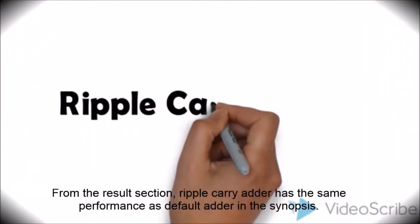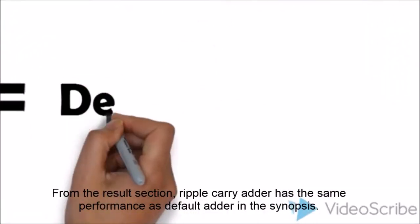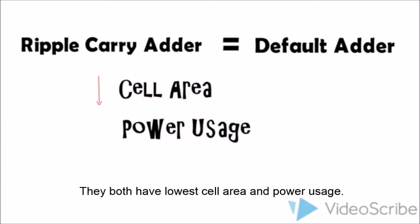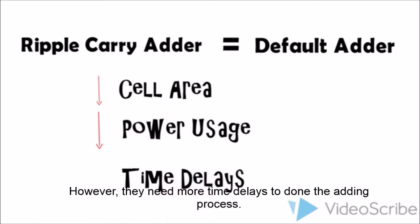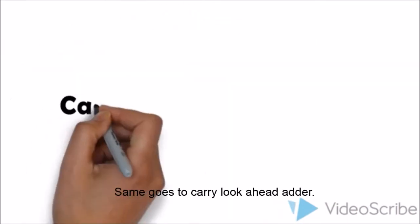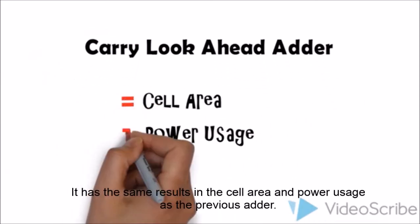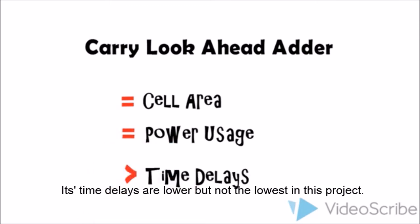From the results section, the Ripple Carry Adder has the same performance as the Default Adder in Synopsis. They both have the lowest cell area and power usage. However, they need more time delays to complete the adding process. The same goes for the Carry Lookahead Adder — it has the same results in cell area and power usage, but its time delays are lower, though not the lowest in this project.